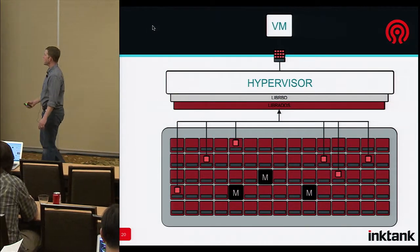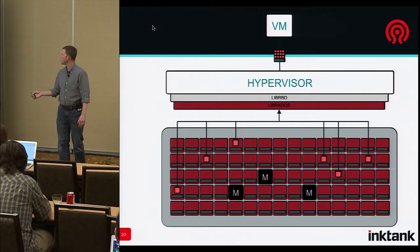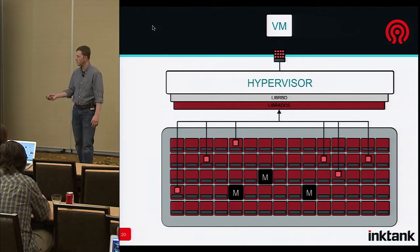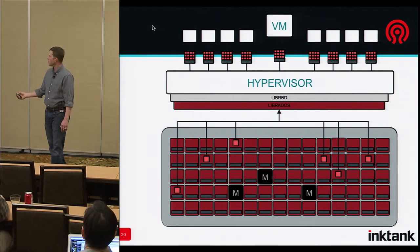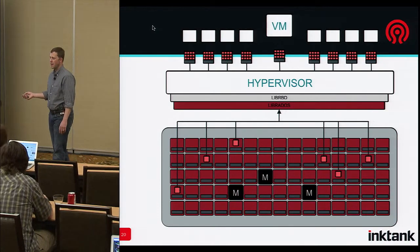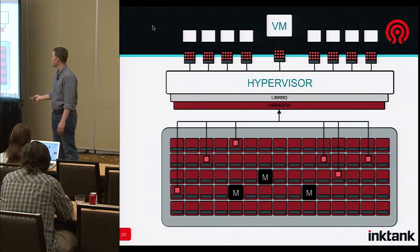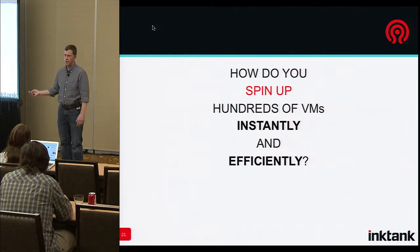So why is that important for cloud storage? So you've got one VM, the block device, hypervisor. We'll get more into the architecture here. Because with the block device that Ceph gives you, you can spin up hundreds of them with cloning.